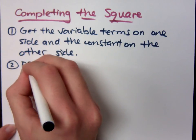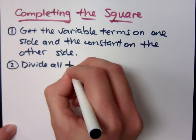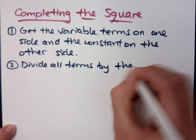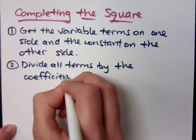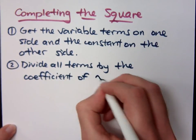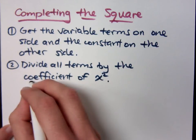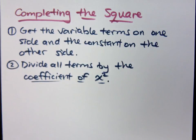The second step is that you divide all terms by the coefficient of x squared. In order to complete the square, you have to have a coefficient of one for the x squared. And when you do that, then you can do the next part.